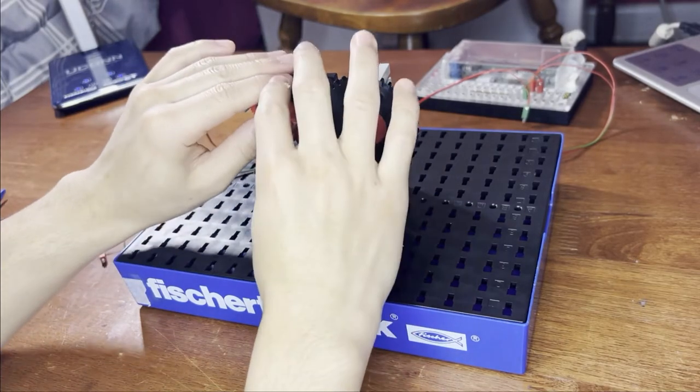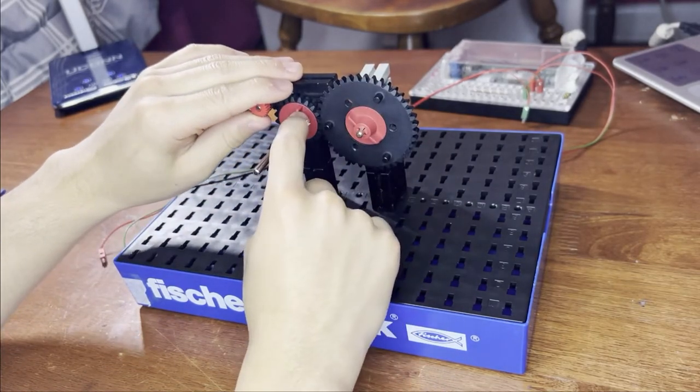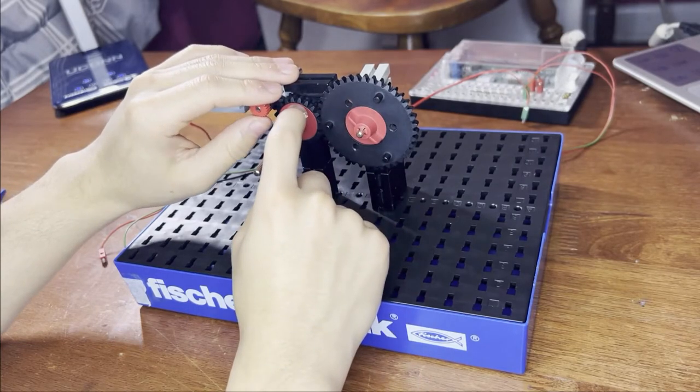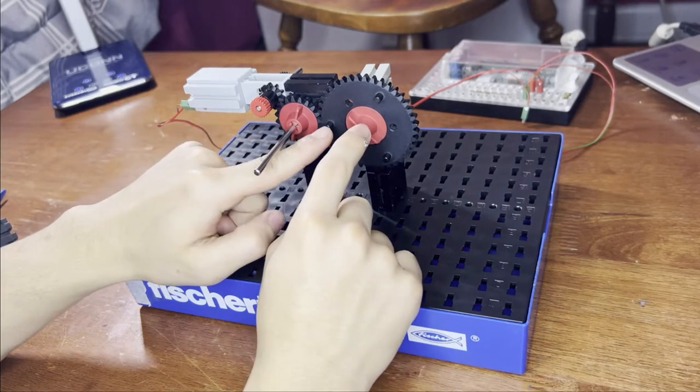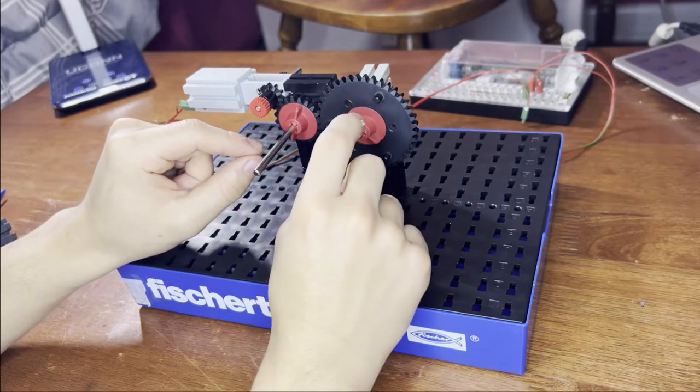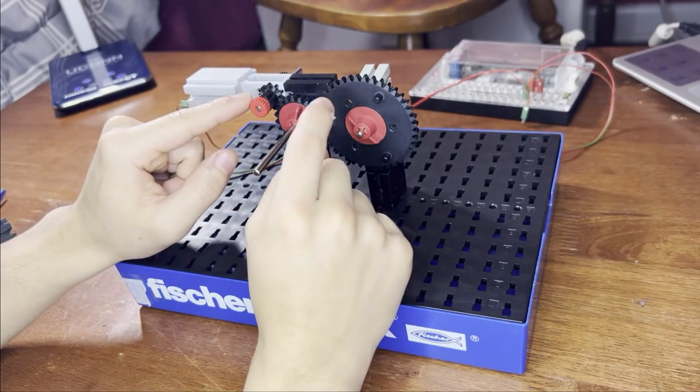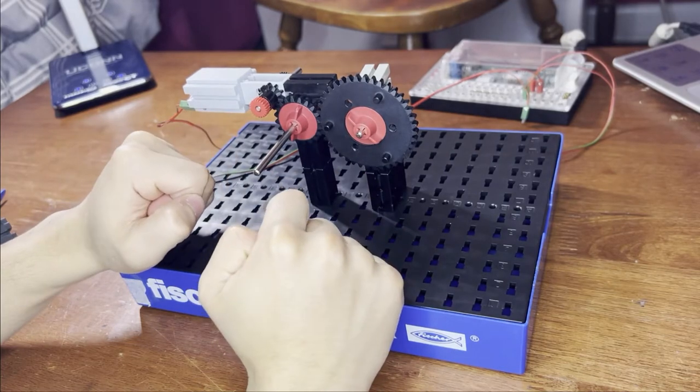So before, if we get rid of this, this gear and this gear would rotate in opposite directions—this one could be clockwise, this one would be counterclockwise. But if we want to make this gear rotate the same direction as this one, we'd have to put an idler gear between them.